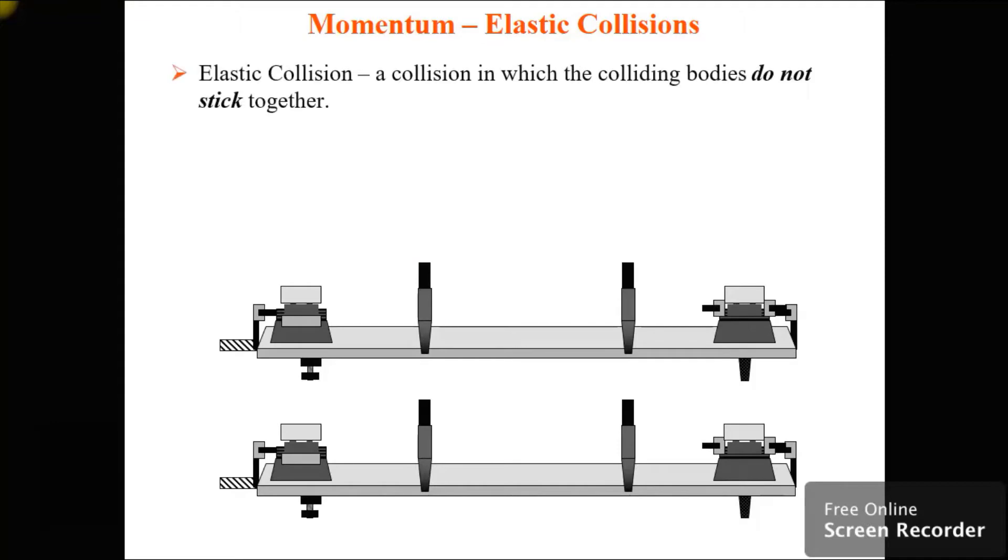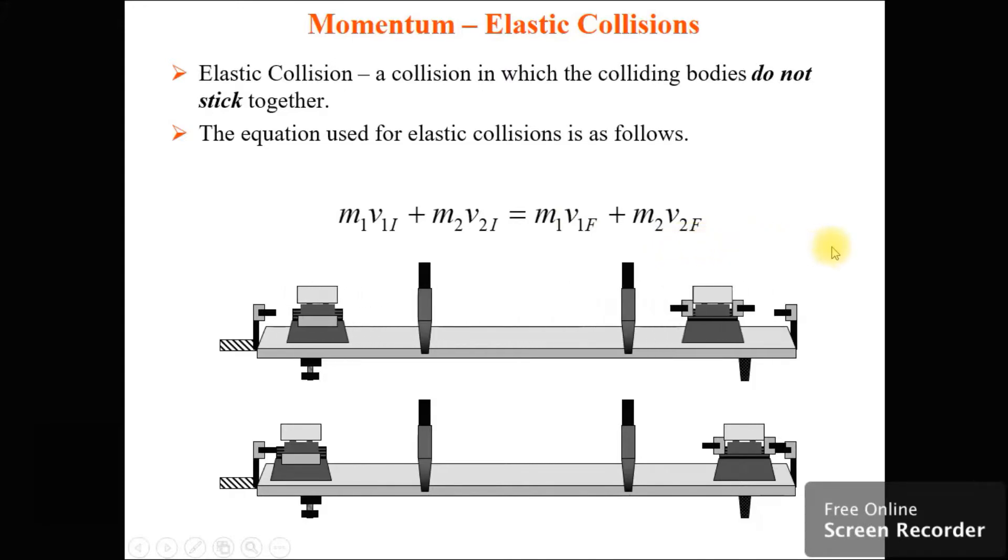Let's see, what makes a collision elastic? That's when the two things do not stick together. They bounce off each other. So there's the equation, and you can see that there's the velocity of the first object and the velocity of the second object, and those are different. So just like a little picture, bang! They collide, and then they keep going off in their own directions.